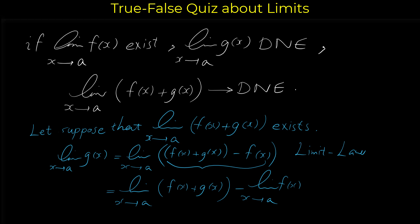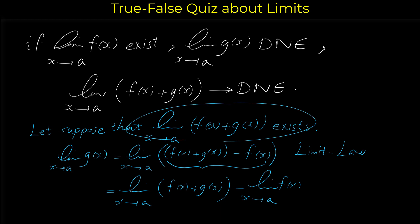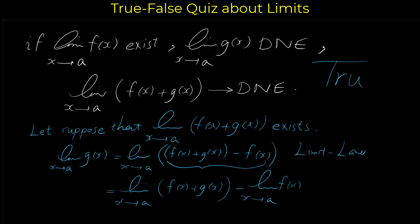Since the limit of [f+g] exists and the limit of f(x) exists, this combined limit must also exist. But according to the statement, the limit of g(x) as x approaches a does not exist — and so we have a contradiction. We get the opposite of the hypothesis: we assumed lim g(x) does not exist, but we proved it does exist. This contradiction shows that our assumption — that the limit of f(x) + g(x) exists — is incorrect. Therefore the given statement is true.